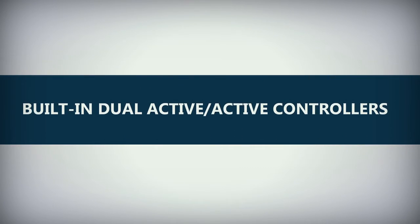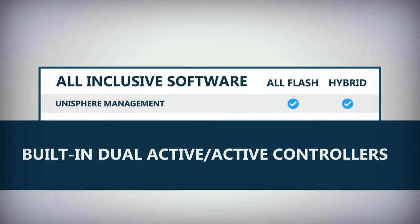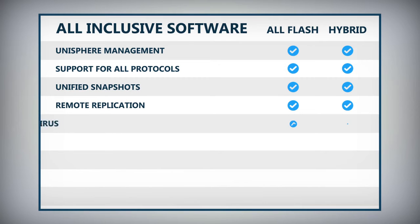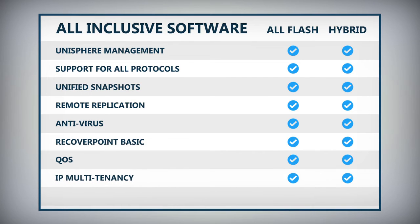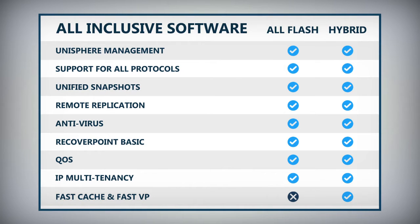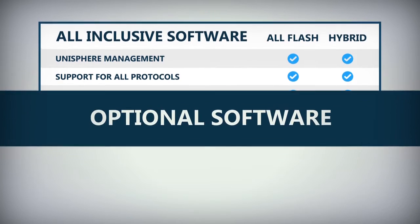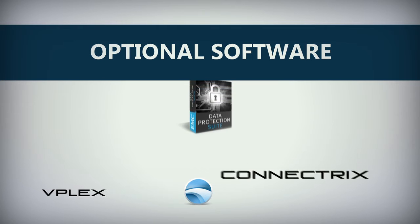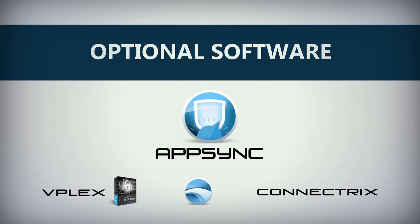Unity features a new scalable 64-bit file system with many new virtualization and enterprise capabilities, and built-in dual-active controllers that ensure application availability. All-inclusive software includes Unisphere management, support for all protocols, unified snapshots, remote replication, antivirus, RecoverPoint Basic, QoS, IP multi-tenancy, and more. FastCache and FastVP are provided with Unity hybrid arrays. Optional software titles include support for vPlex, PowerPath, Connectrix, EMC data protection platforms, and advanced AppSync and RecoverPoint solutions.